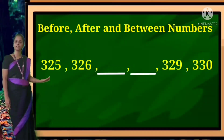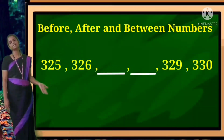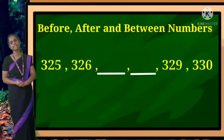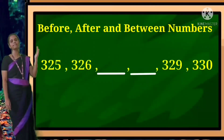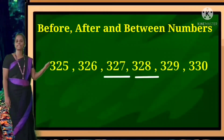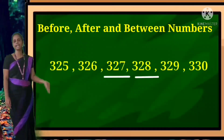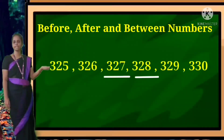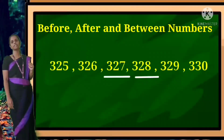Next example: 325, 326, dash, dash, 329, 330. The missing numbers are 327 and 328. After 326 comes 327, after 327 comes 328, and then 329 is written. This is between numbers.